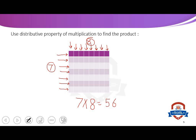Now we want to break it into two sections. The first section has the same 7 rows, and just 2 columns. So the area of the first section equals 7 multiply 2 equals 14.